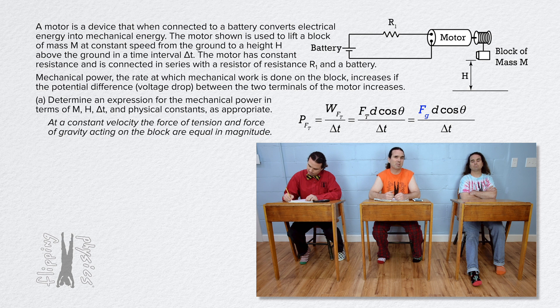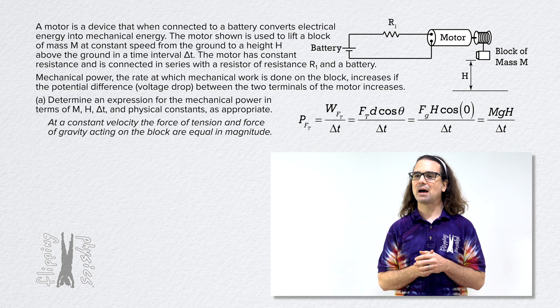The displacement of the block equals H. The force of tension and the displacement are both up, so the angle between those two vectors is zero. Substitute M times acceleration due to gravity for force of gravity, and the cosine of zero degrees is one. So the mechanical power delivered by the motor equals M times g times H all over delta t. Well done, Bobby.